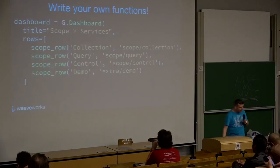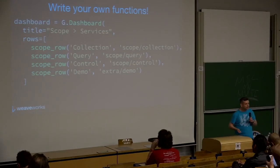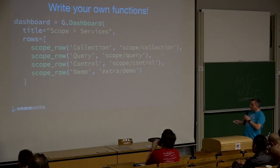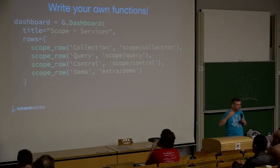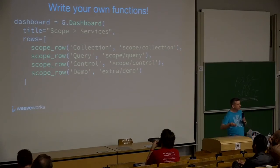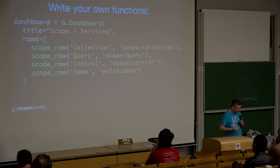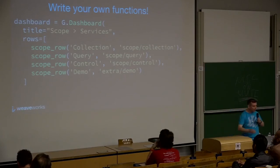You can also write your own functions. We have a thing called Weave Scope, which is a sort of monitoring program, and we do entire rows of dashboards with a single function. As well as being able to check these things into Git, you can layer higher and higher and higher functionality, and you can generate entire dashboards with a single function.